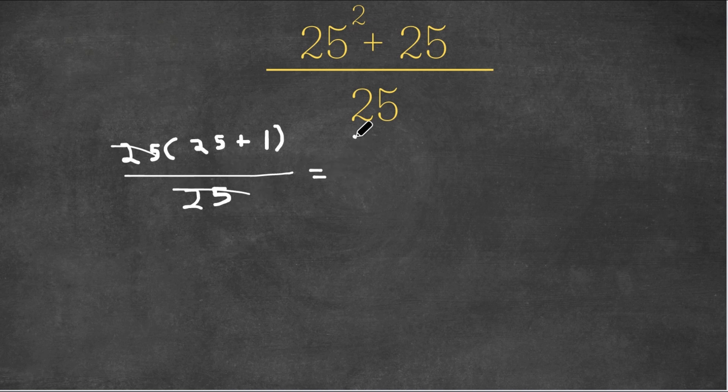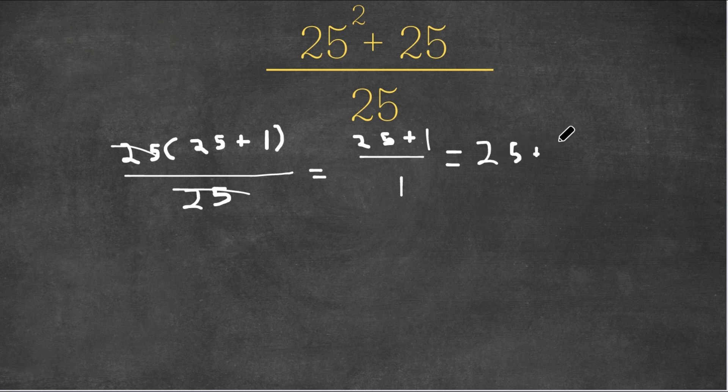this would equal 25 plus 1 over 1, which is the same thing as 25 plus 1, and 25 plus 1 is 26. So the answer here is 26, and this is the first method.